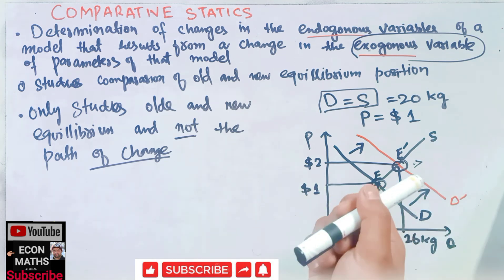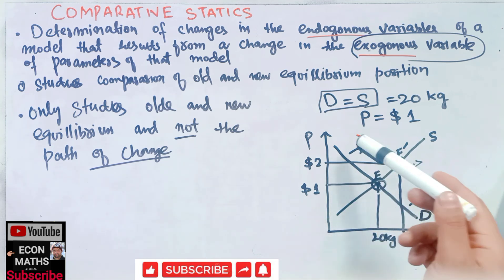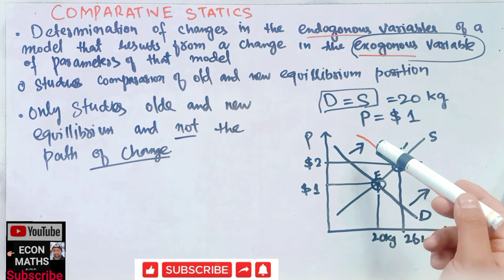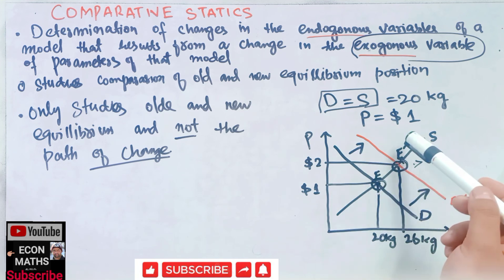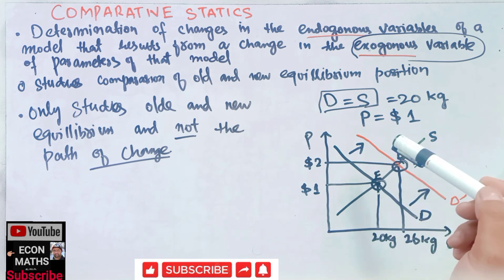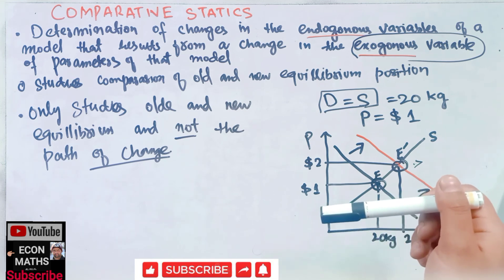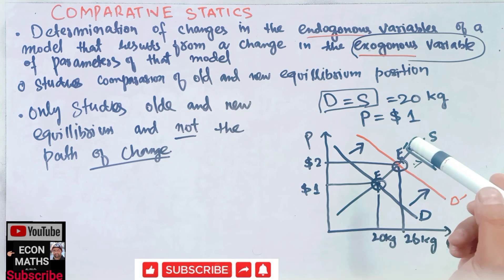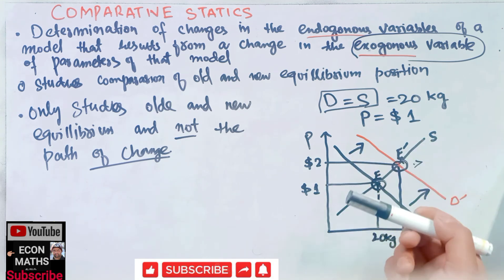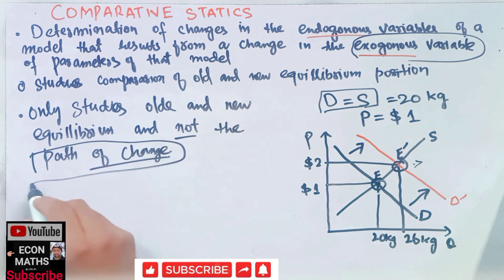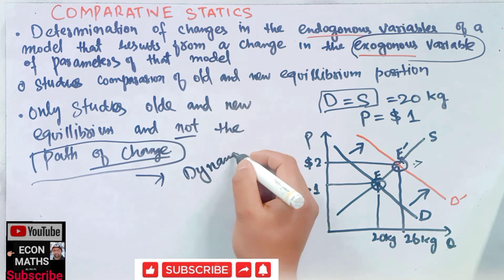Comparative statics focuses on the external forces that cause the equilibrium in the model to change — such as the taste or income of the consumer. If we want to study the path of change, for that we use dynamic analysis. Comparative statics does not study the path, only the old and new equilibrium.